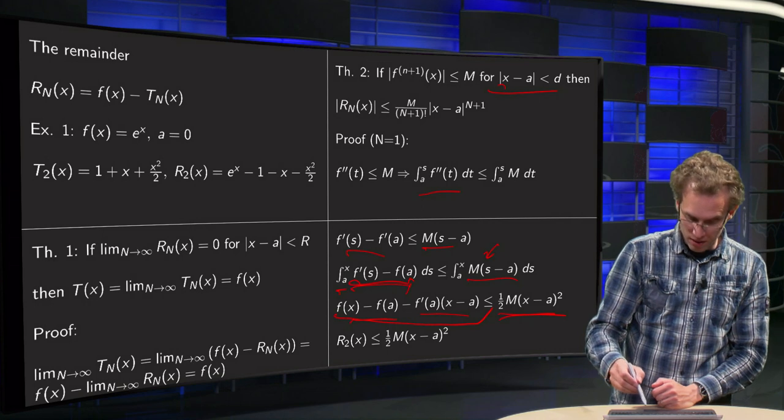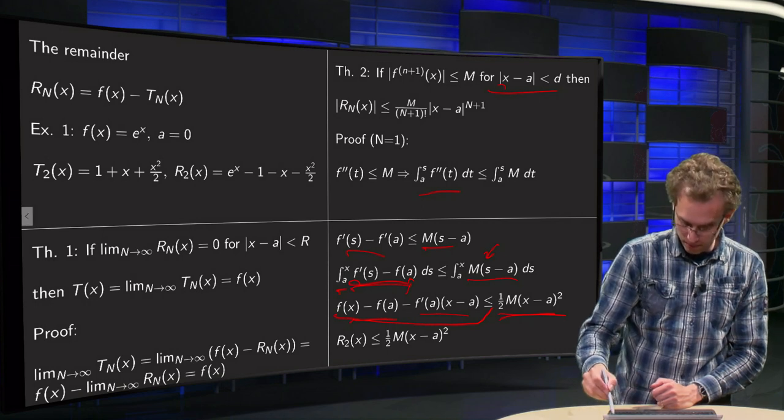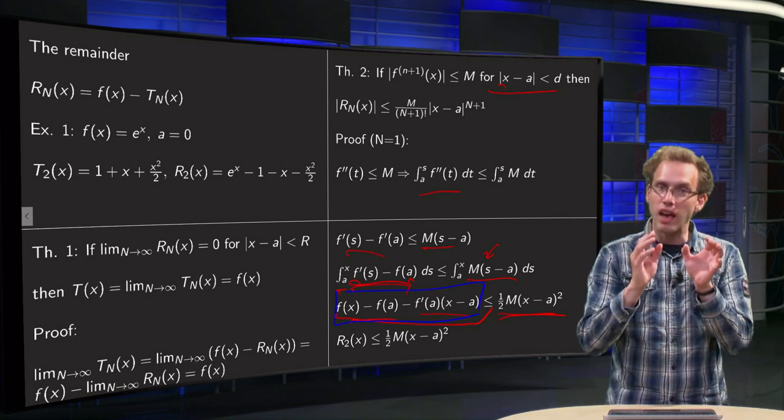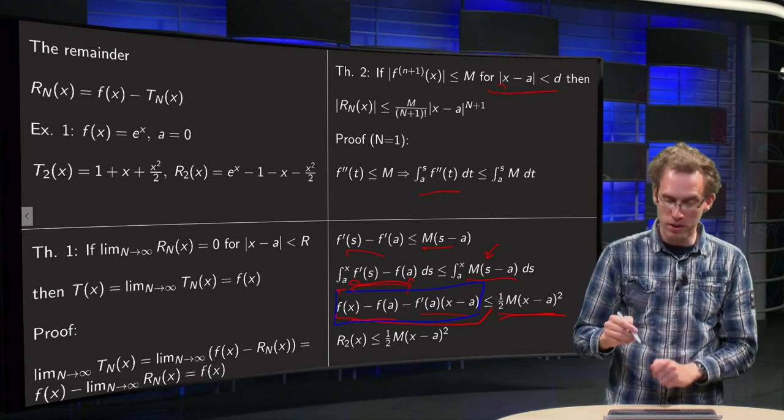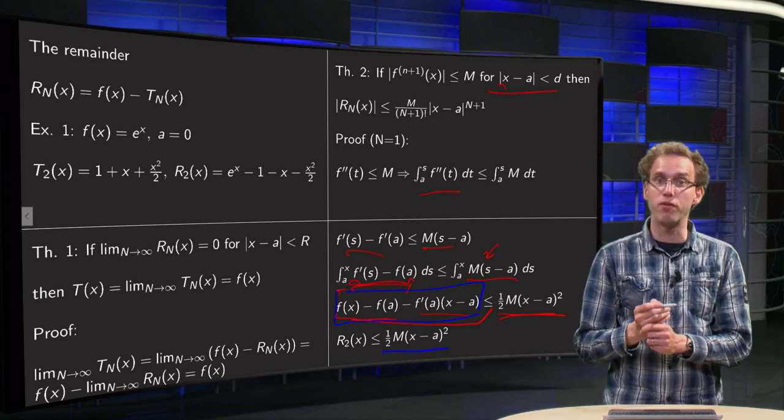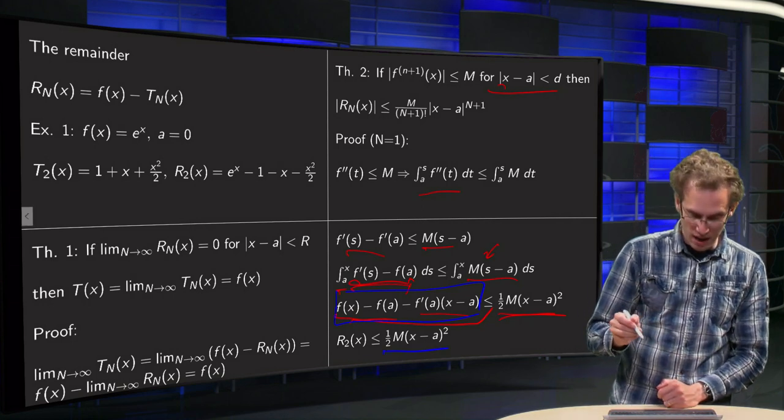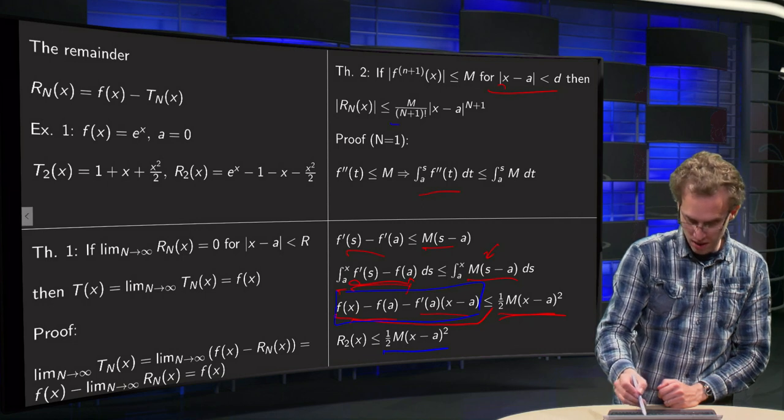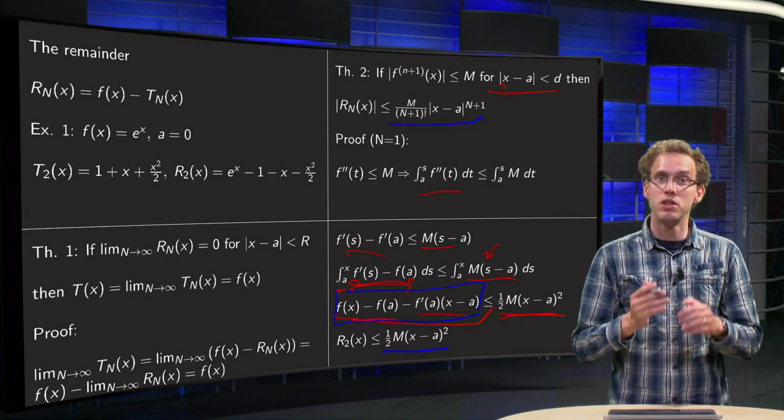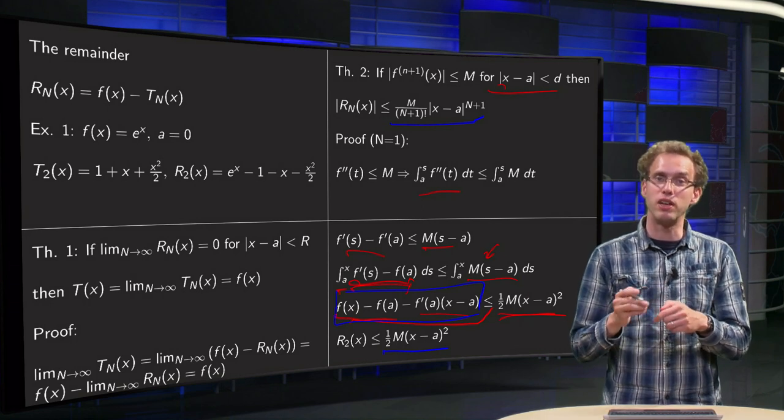And what do we have in the end? Well, this expression over here is exactly f(x) minus [f(a) plus f'(a) times (x minus a)]. So that's exactly the first part of the Taylor polynomial. And here we have this one half of M times (x minus a) squared. So this expression over here is exactly the R_2, the f minus T_1. And on the right it says that it is smaller than one half of M times (x minus a) squared. And that is exactly this expression over here with n equals 1.